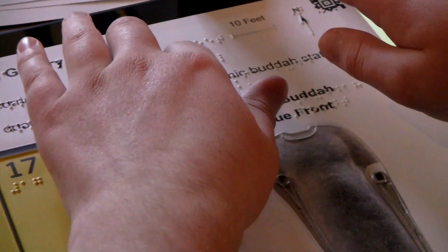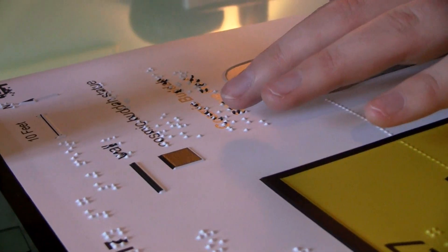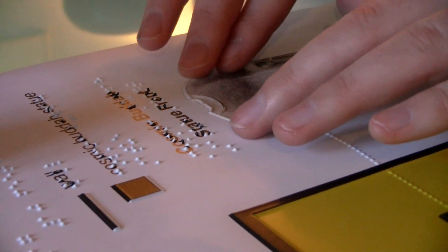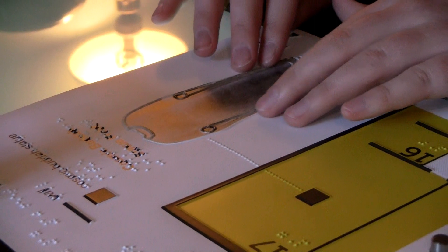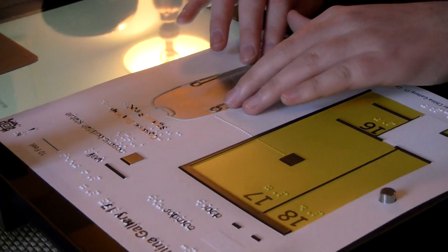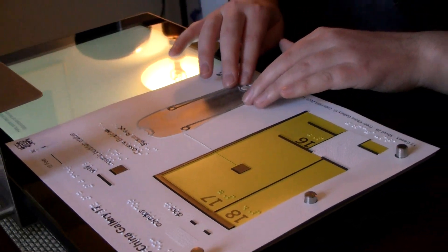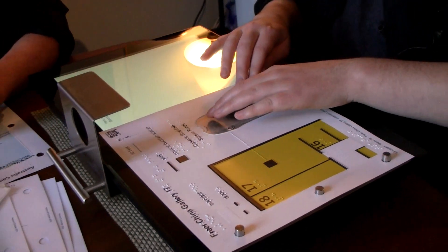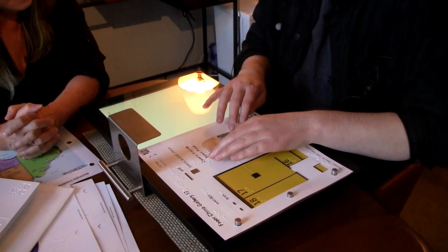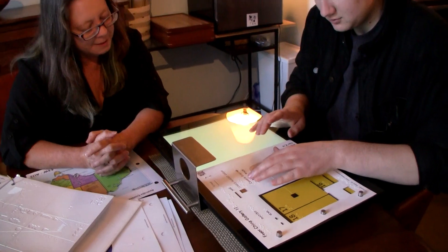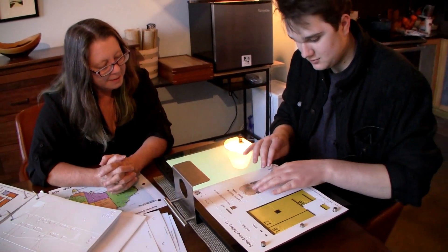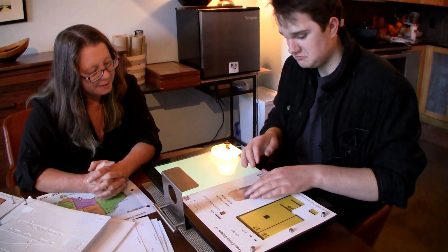Here, some text reads, Cosmic Buddha statue front. The illustration of the statue is below the text. Yeah, so you can kind of go around the perimeter of the statue and get an idea of where that is on the page, what's happening there. Head of the Cosmic Buddha. Chest of the Cosmic Buddha.